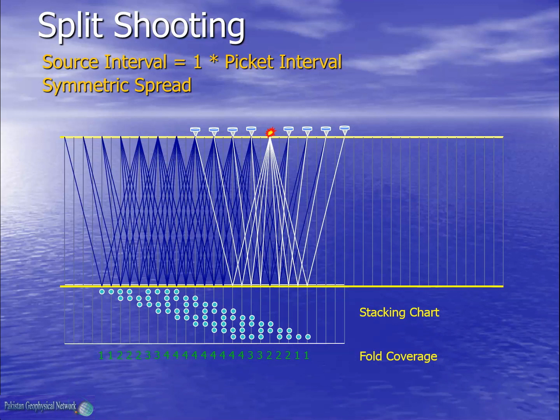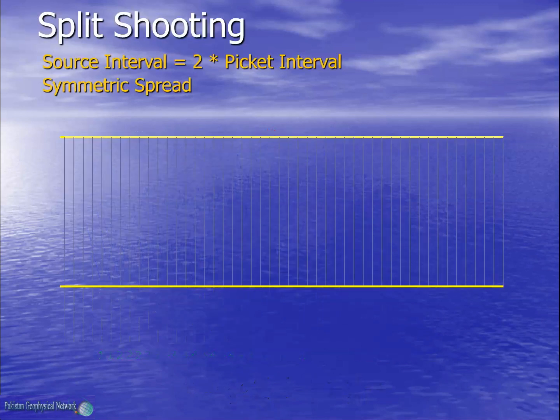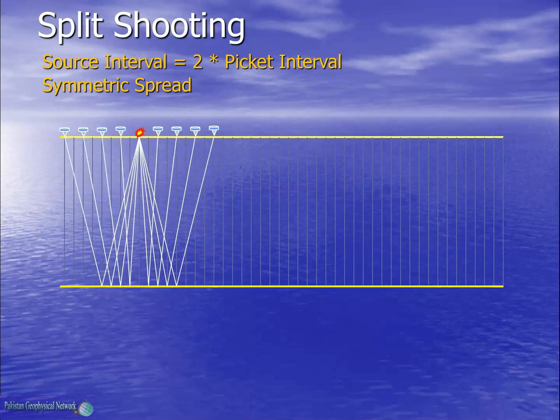Let's consider that the picket interval is 50 meters. Putting this into the fold equation gives the maximum fold as 4. This indicates that the equation gives the maximum attainable fold for a given spread geometry. It may be noted that fold gradually builds up at the start of the line, attains its maximum value in the middle of the line, and then gradually drops at the end of the line. Now let's repeat the same experiment with the split shooting geometry, but with shooting carried out at two picket intervals.